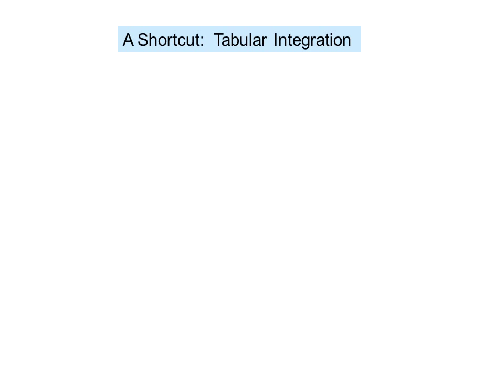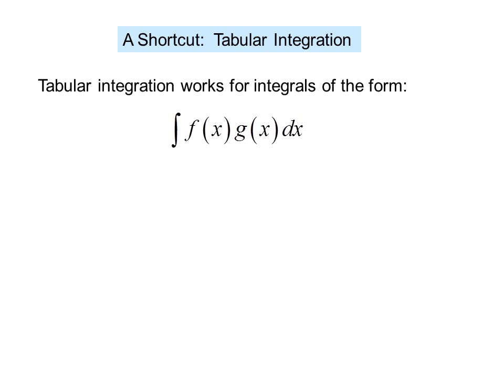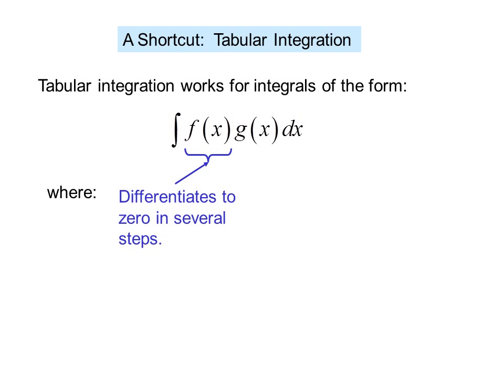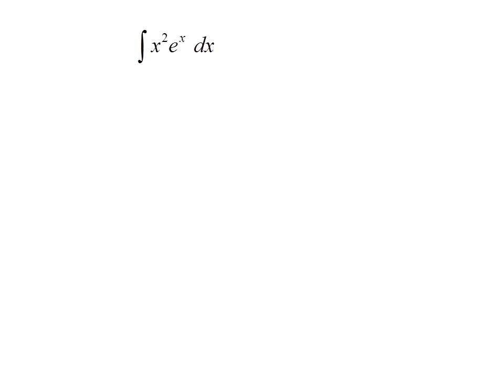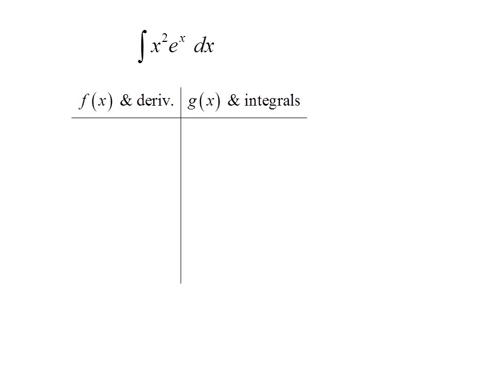A shortcut: tabular integration — a very cool shortcut. Tabular integration works for integrals of the form integral of f(x)·g(x) dx, where f(x) differentiates to zero in several steps and g(x) integrates repeatedly. Actually, tabular integration will work for any integration by parts problem; it just works to best advantage in these situations.